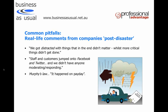More real-life comments: 'We got distracted with things that in the end didn't matter, whilst more critical stuff didn't get done.' If you had some idea of prioritisation upfront, you'd do a few things perfectly rather than everything half. 'Staff and customers jumped onto Facebook and Twitter and we didn't have anyone moderating or responding.' This is also an opportunity — AirAsia had a plane issue and because they were straight onto Facebook and Twitter moderating questions from next of kin and customers, they gained a competitive advantage, and many said the way they responded gave them more faith in the company.